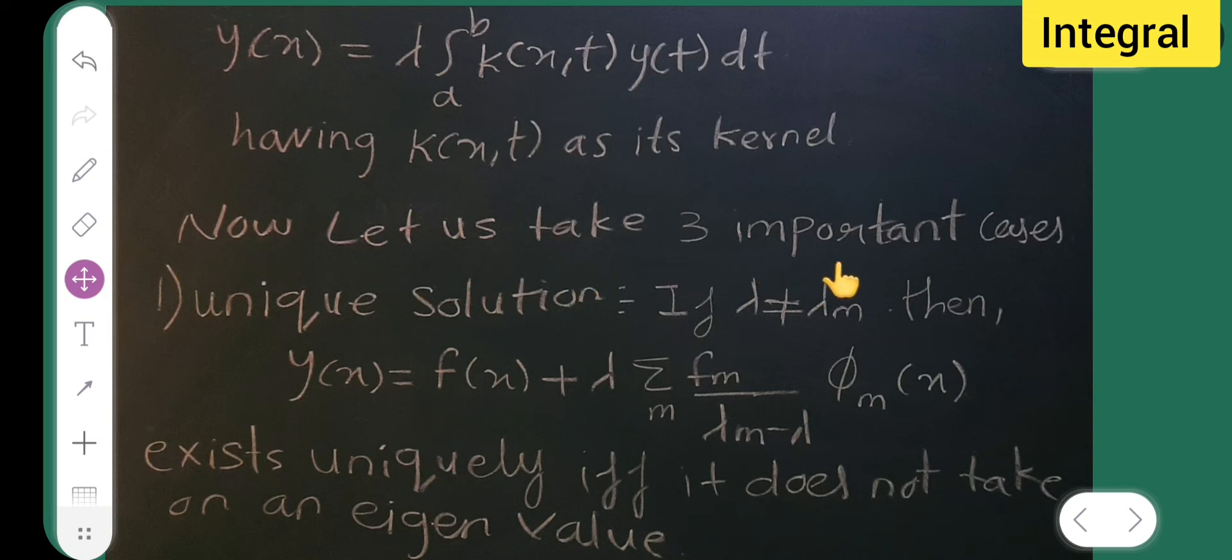Now, let us take 3 important cases. This is my case 1 with the unique solution. If lambda is not equal to lambda m, then y of x is equal to f of x plus lambda into summation m, fm upon lambda m minus lambda into phi m of x exists uniquely if and only if it does not take on an eigenvalue.